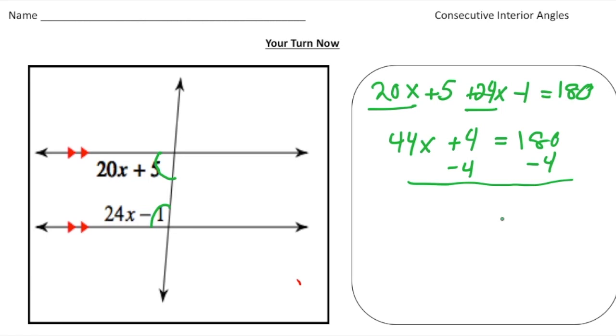So now we get 44x equals 176, and then divide both sides by 44, which means x is going to equal 4. So that's most of the work. Now let's just figure out the angle measures.